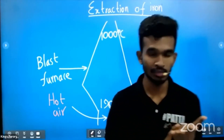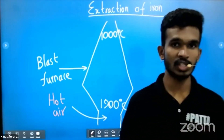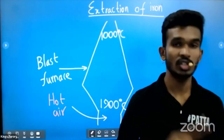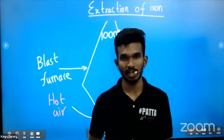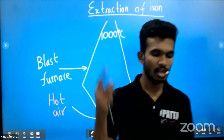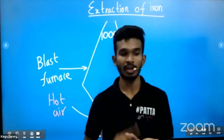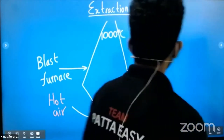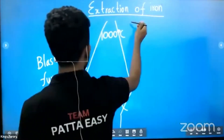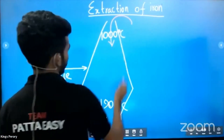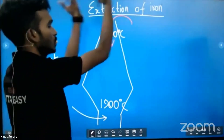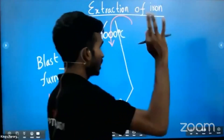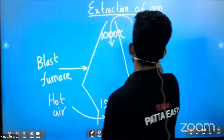Quick recap: the setup used for iron extraction is a blast furnace. The temperature range is 1000 to 1900 degrees Celsius. Hot air is blown from the bottom. Now, what are the raw materials you insert? What are the things you insert inside for the extraction of iron?